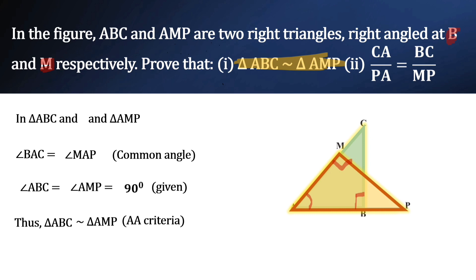Here we have written the vertices in correct order. Angle A corresponds to angle A — it is common. Angle B corresponds to angle M — both are 90 degrees. So we have written the triangles in the correct order of vertices.